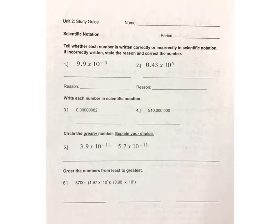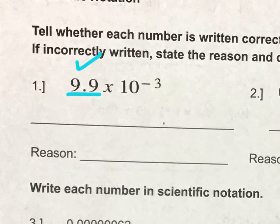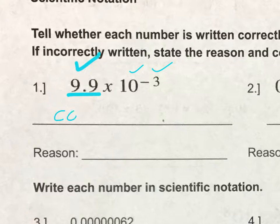Looking at number one, I see 9.9 times 10 to the negative third. 9.9 is between 1 and 10, so that's okay. And 10 to the negative third is an acceptable power of 10 and exponent. So number one is correct, so we don't need to put a reason.